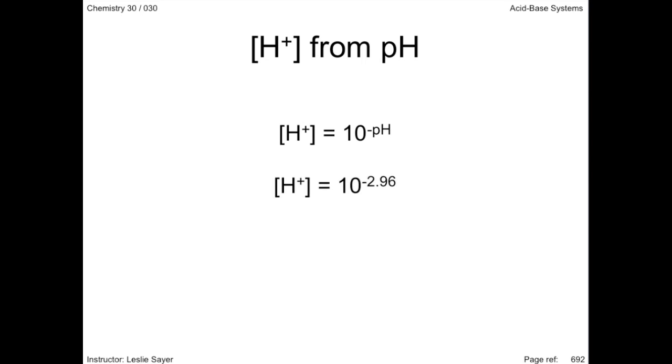Substitute the pH from the question and calculate the anti-log, often performed as second function log on many calculators. And the hydrogen ion concentration at equilibrium is 1.0964 × 10^-3 moles per liter.